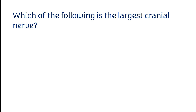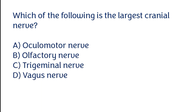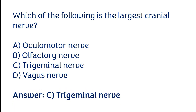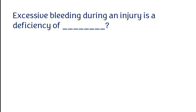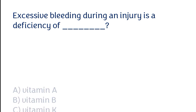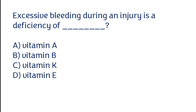Which of the following is the largest cranial nerve? Oculomotor nerve, olfactory nerve, trigeminal nerve, or vagus nerve. The correct answer is option C — the trigeminal nerve is the largest cranial nerve.